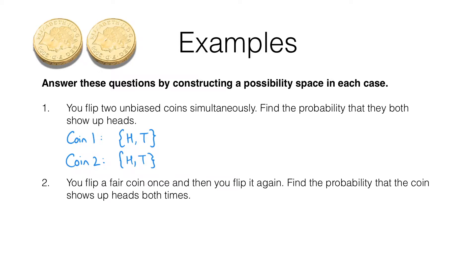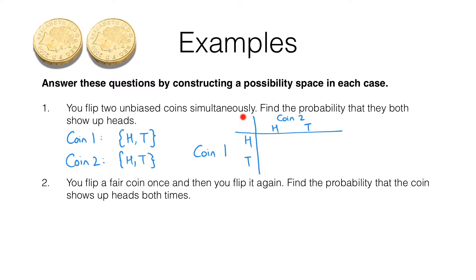Now what we're doing in this question is flipping two coins simultaneously, so this is a combined experiment. We can show all the possible outcomes by drawing a sample space diagram for the combined experiment, and a table is often helpful for doing this. I'm going to show the possible outcomes for coin one and the possible outcomes for coin two, and we can fill in the outcomes of this combined experiment.